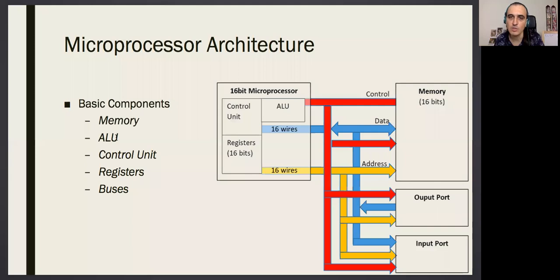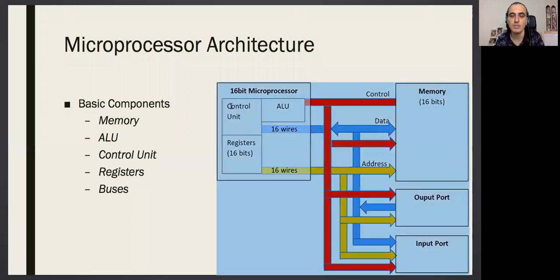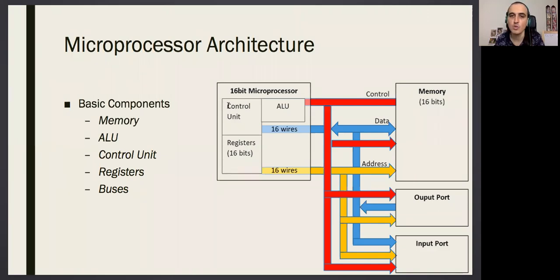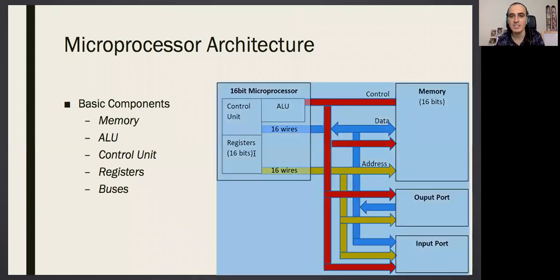The ALU is the component that makes all the operations — we'll get to it in the following slides. The control unit is the component that understands the language you are going to use to speak to the microprocessor, which is called assembly language. The control unit will understand that language.